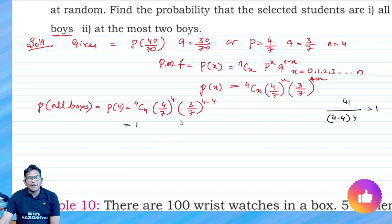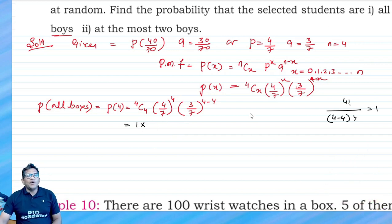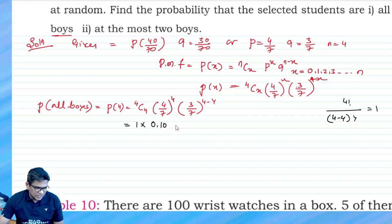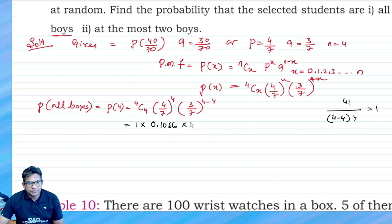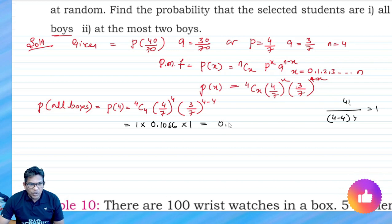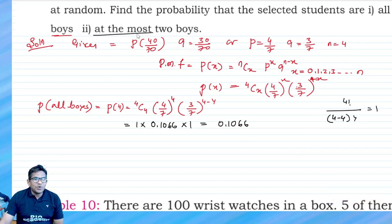So the calculation is: 4 divided by 7, four times over, multiplied together. That gives 0.1066. And (3/7)^0 equals 1, since 4 minus 4 is 0. So the final answer for all boys is 0.1066.